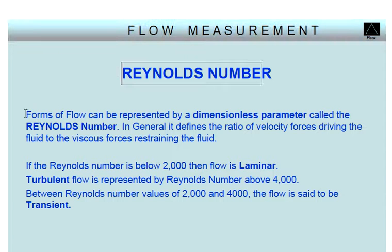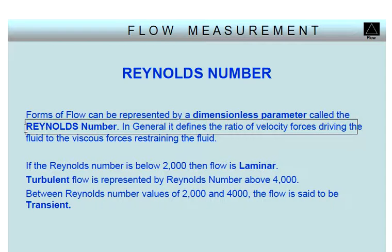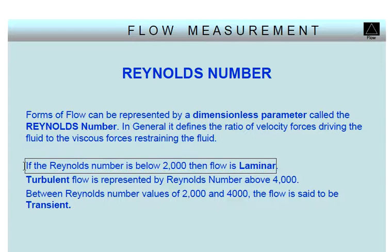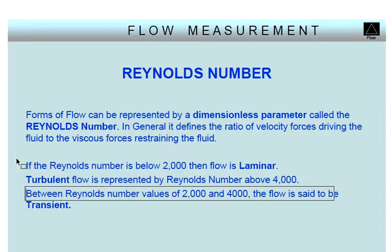Forms of flow can be represented by a dimensionless parameter called the Reynolds number. In general, it defines the ratio of velocity forces driving the fluid to the viscous forces restraining the fluid. If the Reynolds number is below 2000, then flow is laminar. Turbulent flow is represented by a Reynolds number above 4000.